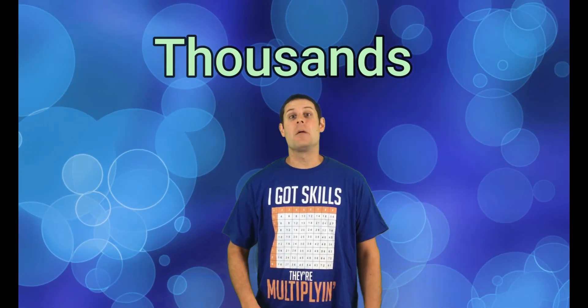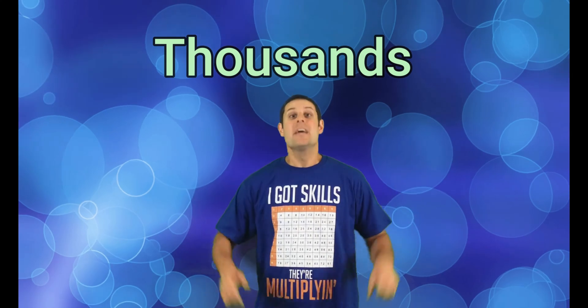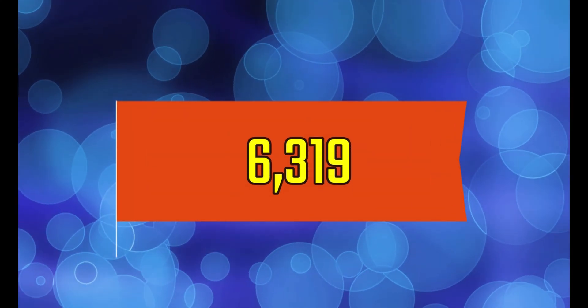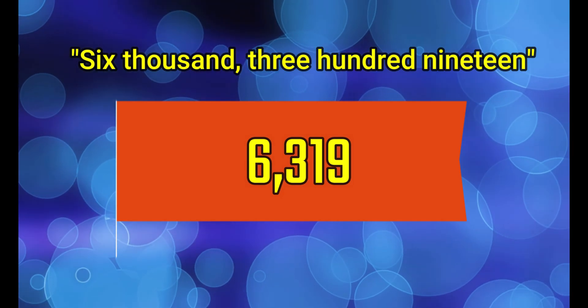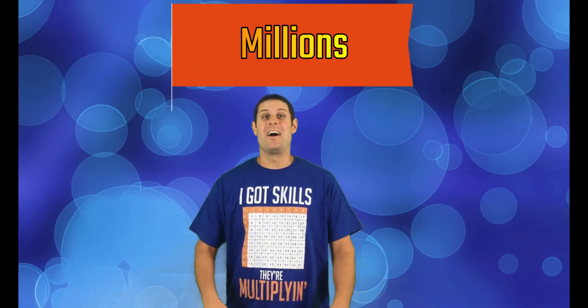Now the thousands column is very unique because after you say the word thousand you actually need to place a comma. The number on the screen says 6,319. After the thousands column comes the ten thousands column, the hundred thousands column, and then eventually the millions column.